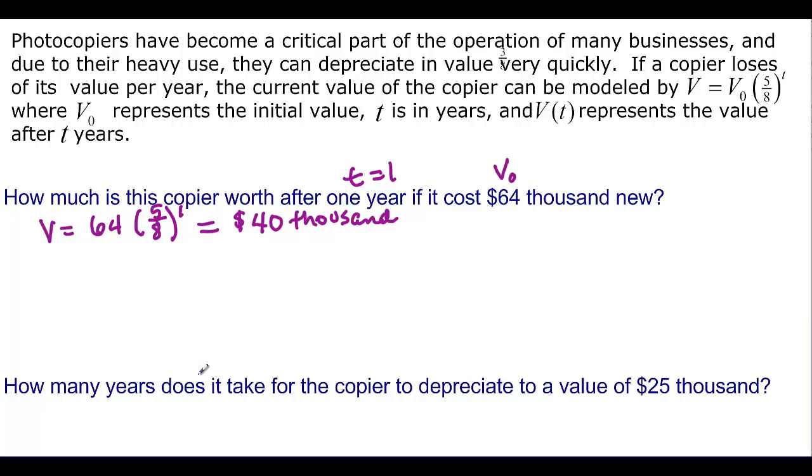And how many years will it take for the copier to depreciate to 25,000? Well, now we know the V. It still started out at 64,000, and our base is still 5 eighths, but now we don't know T. So we're going to have 25 divided by 64 is equal to 5 over 8 to the T.